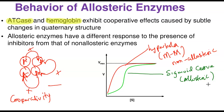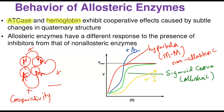The sigmoid curve is characteristic of allosteric enzymes and shows their cooperativity. If you introduce an inhibitor, it shifts the sigmoid curve to the right — meaning the inhibitor reduces the binding affinity of the substrate. When you add an activator, it shifts the curve to the left, meaning more substrate binds to the enzyme, increasing the rate of the enzyme-catalyzed reaction.